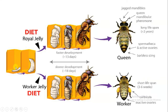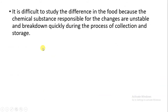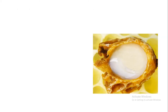If larvae are given royal jelly for only the first three days and then given another kind of food called bee bread, they convert into workers. But if royal jelly is given to the larvae throughout their life, they convert into the queen, and the queen is the only one able to produce eggs. The substances present in royal jelly are chemical substances which are unstable and break down quickly during collection and storage, which is why we are unable to determine exactly what chemical substances are making such a difference between the worker and the queen.